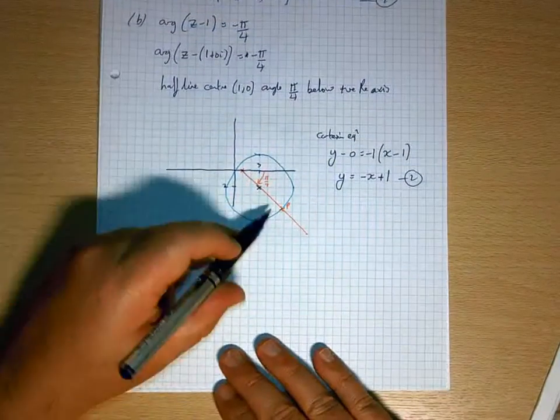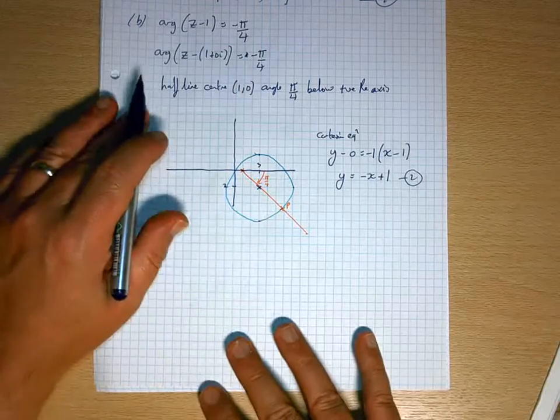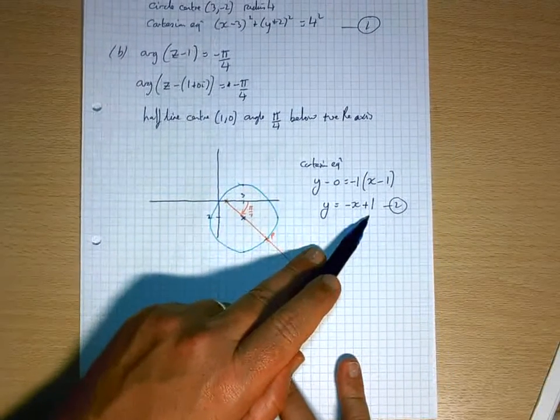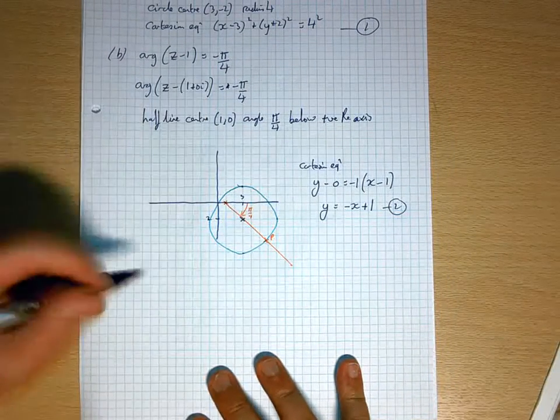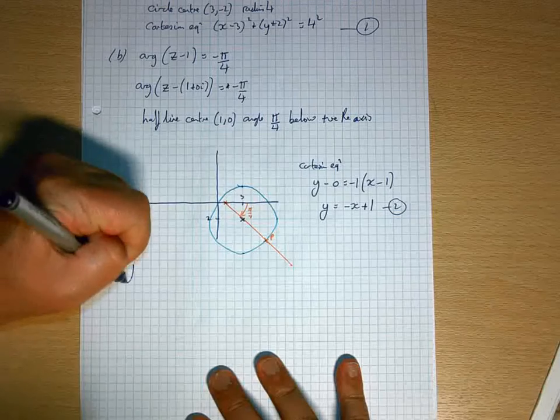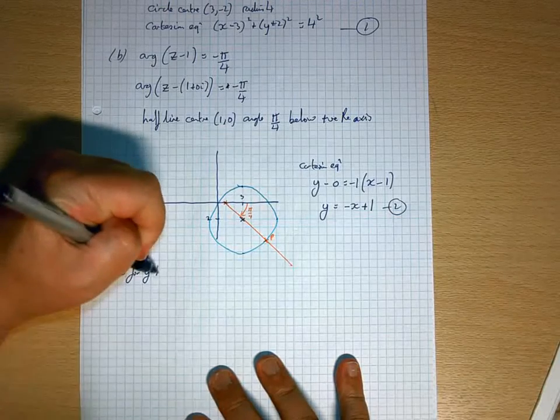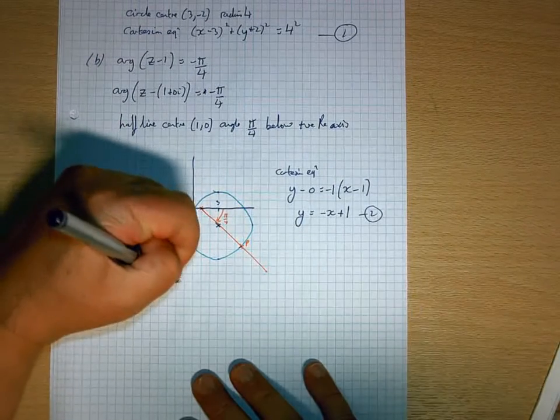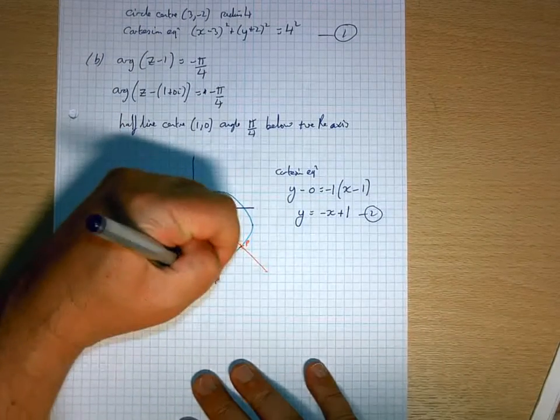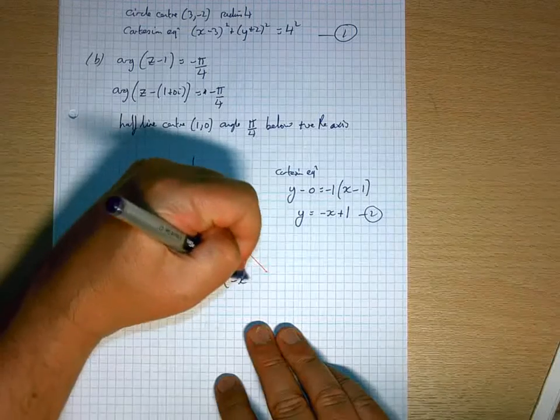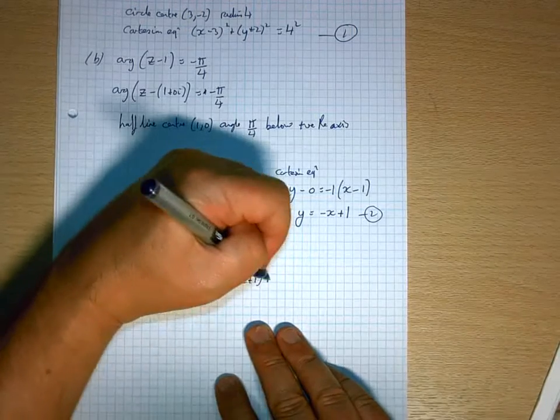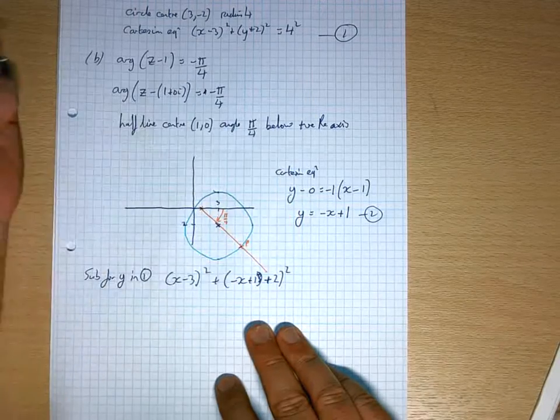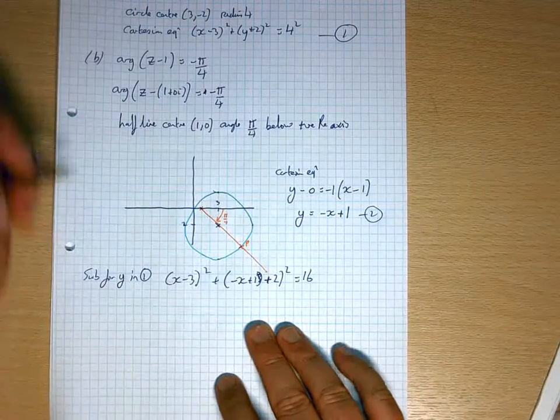So y equals minus x plus 1. Equation 2, and I'm interested in that point there. So what I now need to do is to substitute this into there. So sub for y in 1.